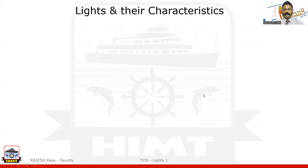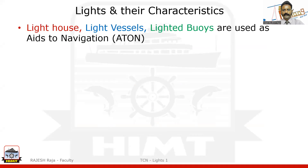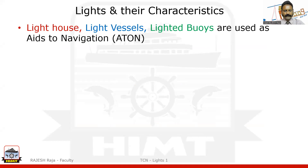Let us quickly look at the different types of sources from where you can get a light to help in navigation. The first one is your lighthouse, the second one is a light vessel, and the third one is the buoys. These are the three main sources of aid to navigation which you find on your charts as well as in real life.